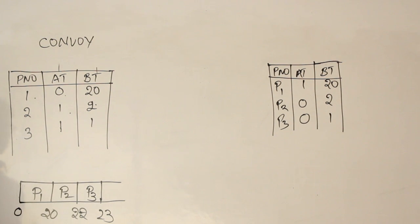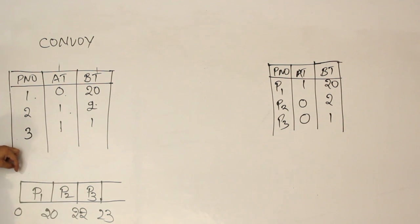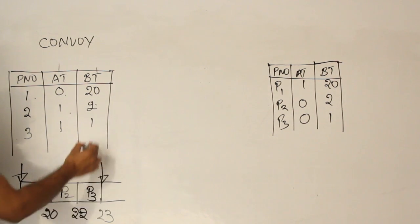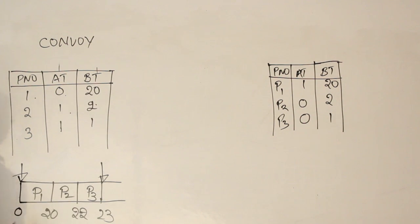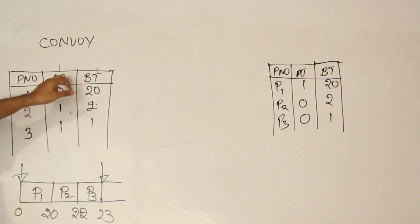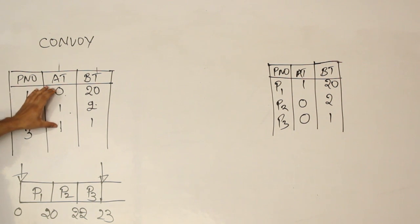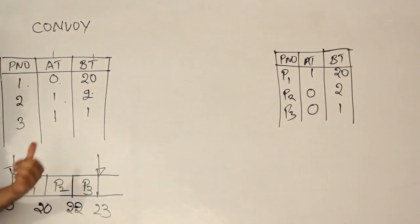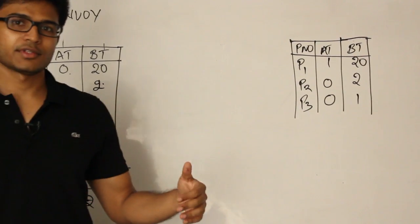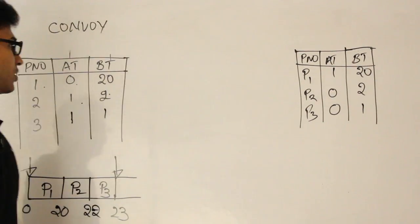The total schedule starts at 0 and ends at 23. You can verify: the sum of all burst times equals the total schedule duration when starting at 0 and there are no gaps. In this case there are no gaps, meaning the CPU never waits — by the end of one process the next is already available.